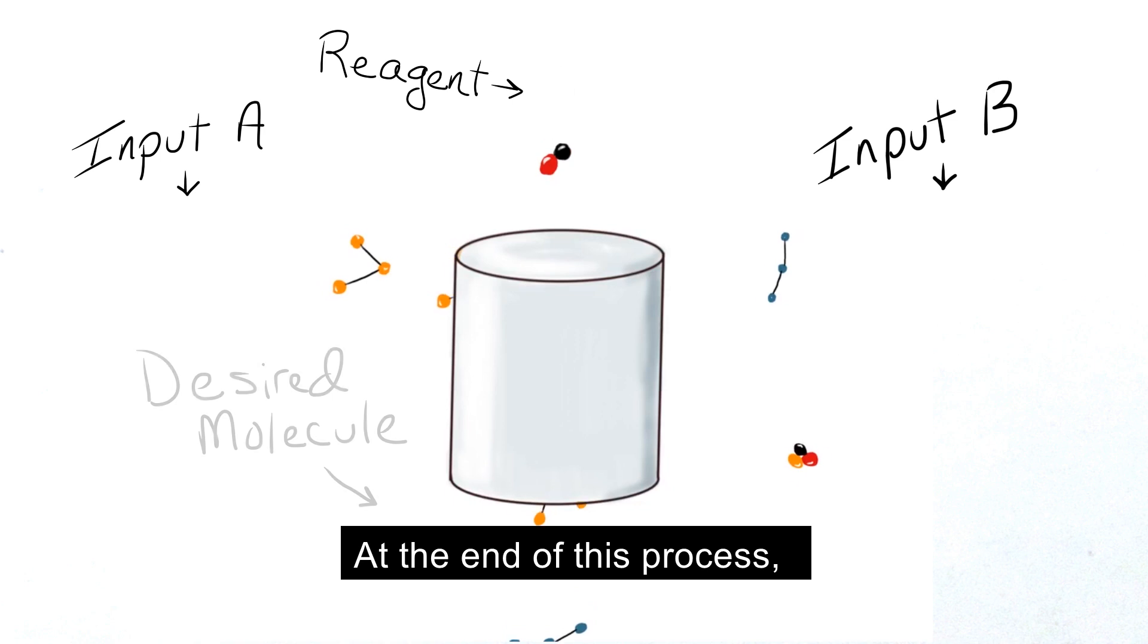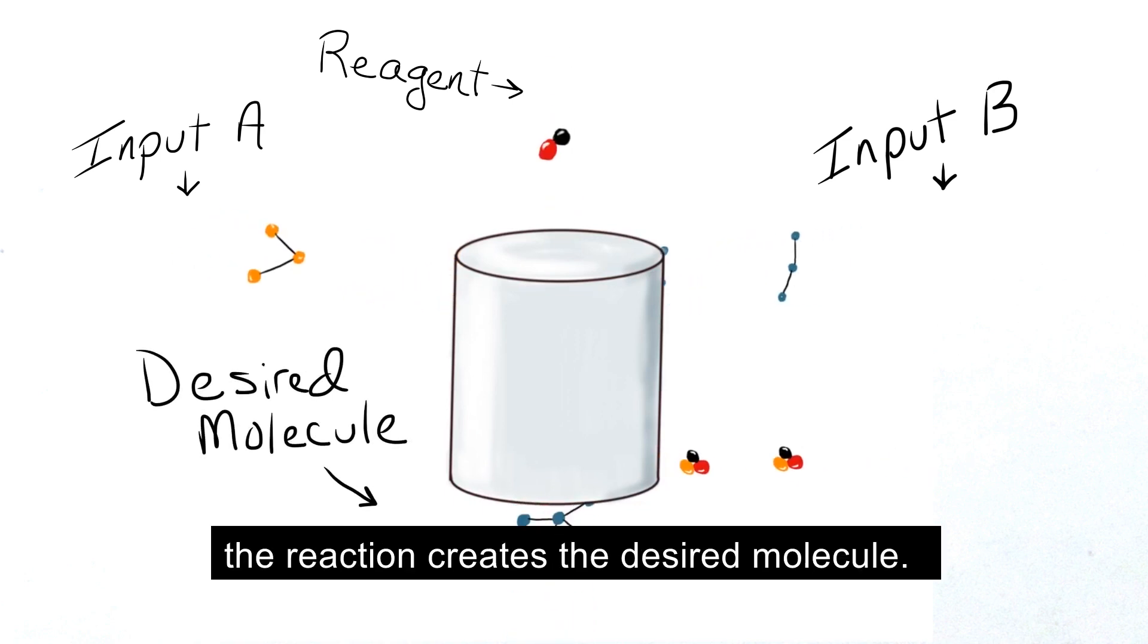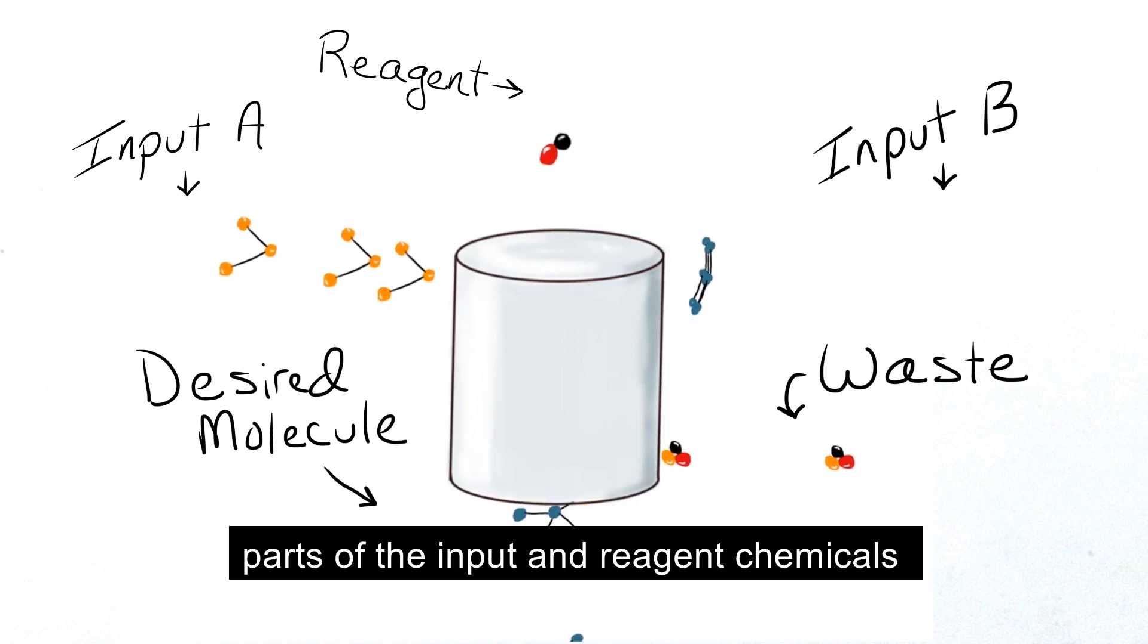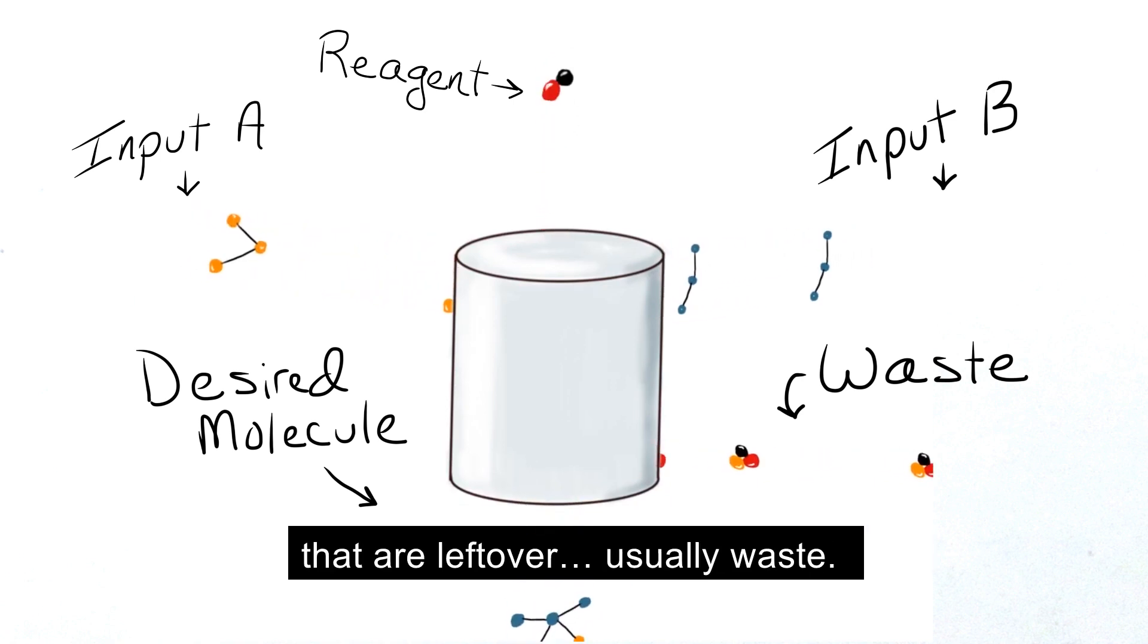At the end of this process, the reaction creates the desired molecule. But it also creates collateral molecules, parts of the input and reagent chemicals that are left over, usually waste.